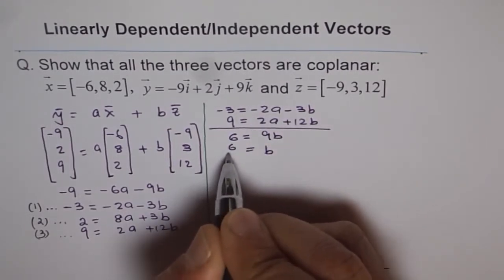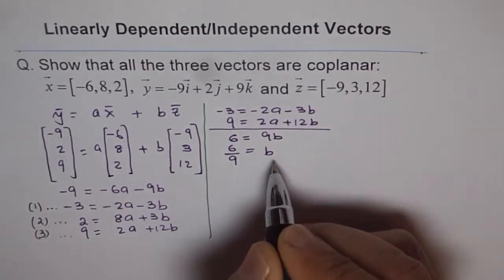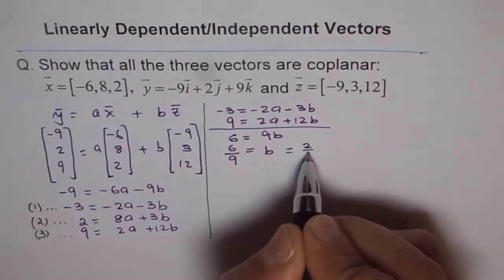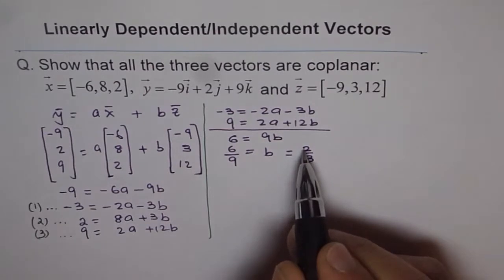So in a way, b is equal to 6 over 9, or it is equal to, if I divide by 3, I get 2 over 3. Now we get b as 2 over 3.